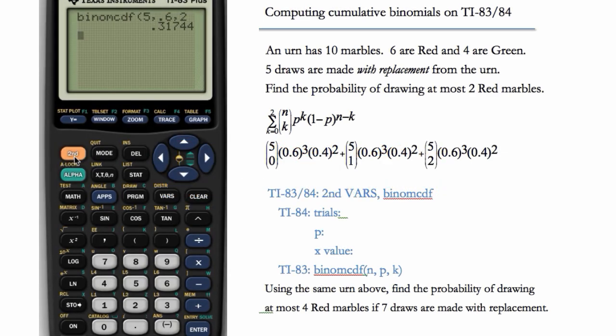On the TI-83, we'll do second vars binomcdf. Here our n is seven. Our p, we use the same urn, so our p is still 0.6. And our upper bound here is at most four, so we'll put four. And this is what we get.